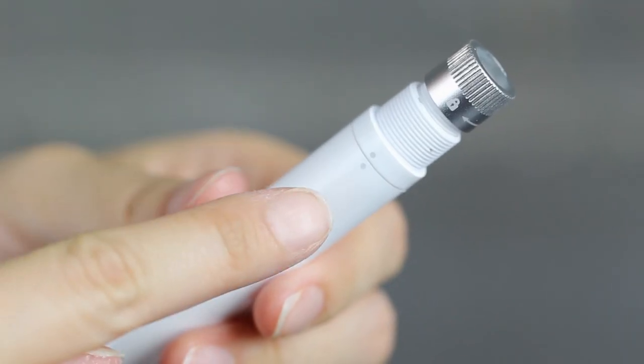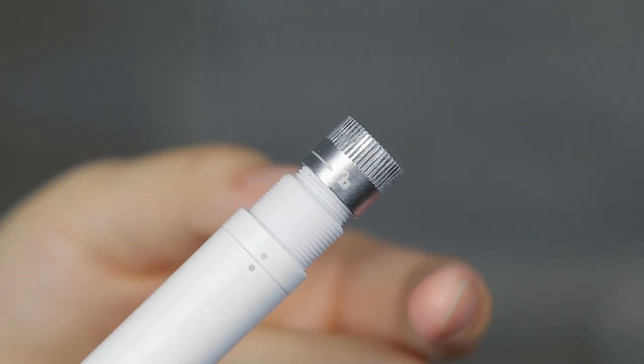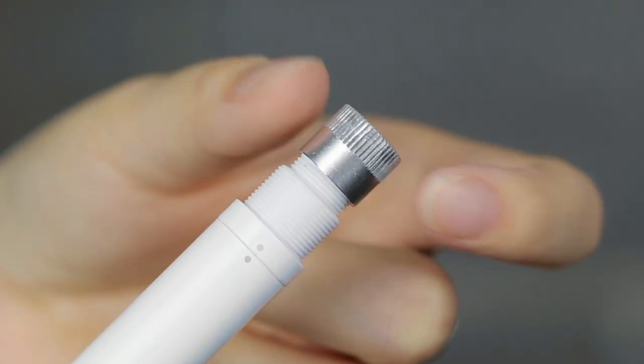Rotate the ring on the bottom half of the case until the two grey dots align. Unlock the metal screw to allow room for the pencil to be inserted.